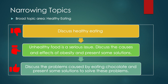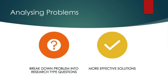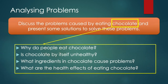We have identified the problem. Now we need to analyse it. To analyse, you need to break down the problem into research-style questions and then find information. Breaking down a problem is important because it helps us to avoid jumping too quickly to solutions that might only address the impacts and not the causes. You need to start thinking about the root causes of the problem. Taking the essay question on chocolate as an example, you need to ask questions such as: Why do people eat chocolate? Is chocolate by itself unhealthy? What ingredients in chocolate cause problems? What are the health effects of eating chocolate? And so on. This is how you analyse a problem.